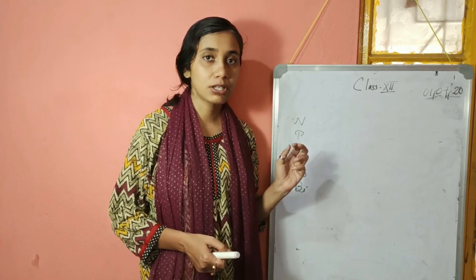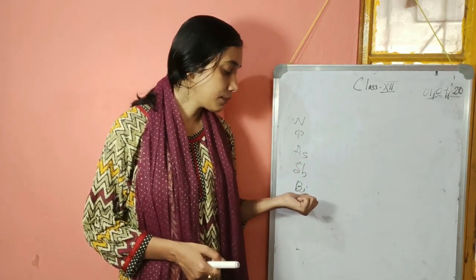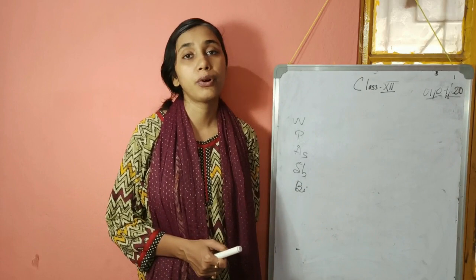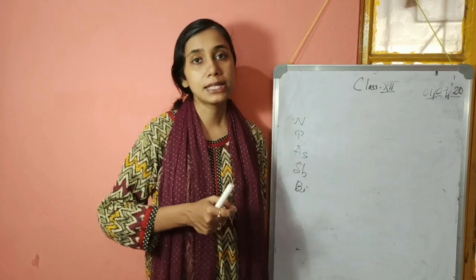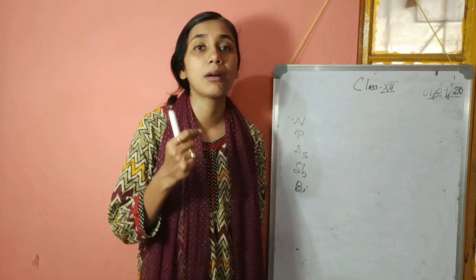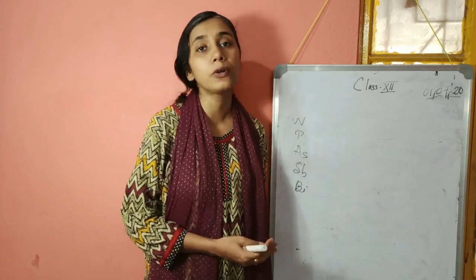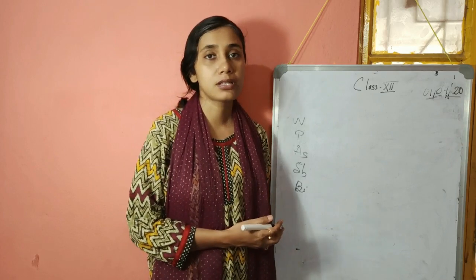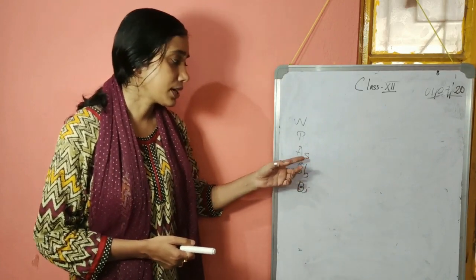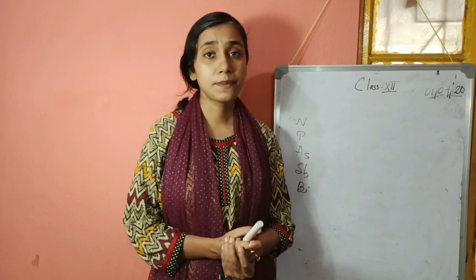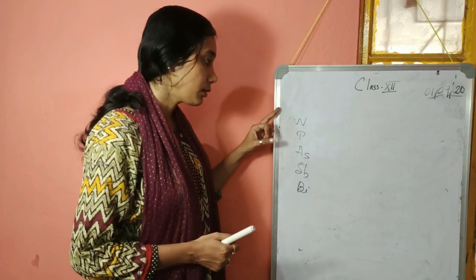If we talk about oxidation states, nitrogen and phosphorus form 3− charges. But moving down, antimony and bismuth have a more stable +3 state and do not form −3. The inert pair effect plays a vital role here, just as we saw in Groups 13 and 14, since these elements come after the transition elements. Due to the inert pair effect, +3 and even +1 oxidation states are more stable, and compounds like SbF3, BiF3, and BiCl3 are more stable.